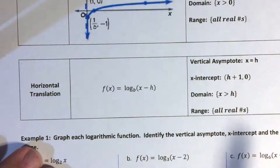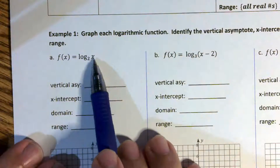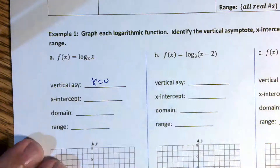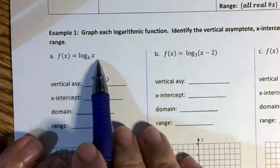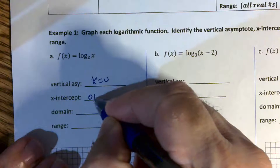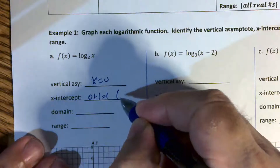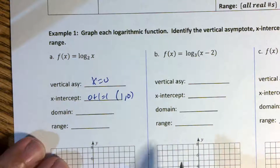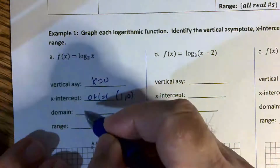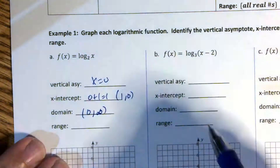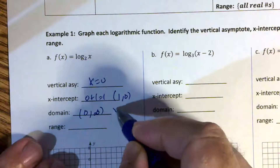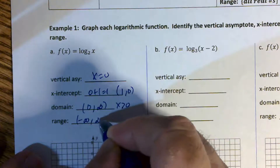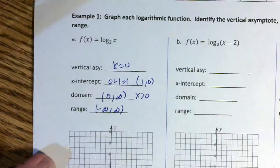Looking at this first example, there's no h being added, so the vertical asymptote is x equals 0. The x-intercept is h plus 1, which is 0 plus 1, giving me 1 — so the x-intercept is (1, 0). The domain is related to the vertical asymptote: it's from 0 to infinity, or x is greater than 0 — notice there's no equal-to bar. The range is all real numbers, negative infinity to positive infinity.